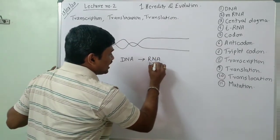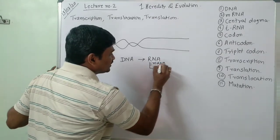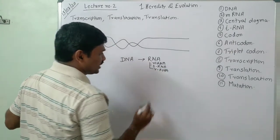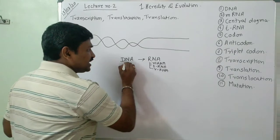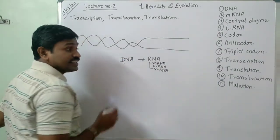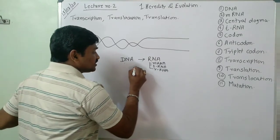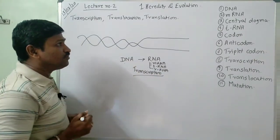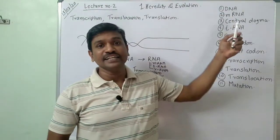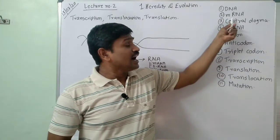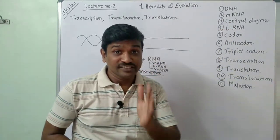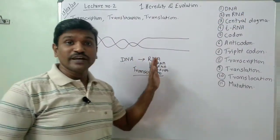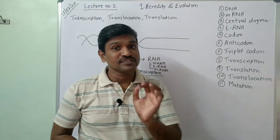There are three types of RNAs: mRNA, tRNA, and rRNA — that is ribosomal RNA. DNA is converted into RNA, and this process is known as transcription. The protein is formed from DNA through mRNA. mRNA stands for messenger RNA.